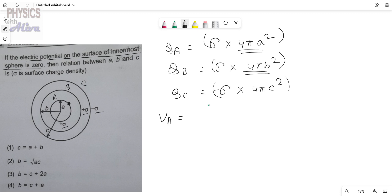Now we have to write what is the equation of the potential on surface A. If you don't know how to write the potential for this concentric spheres, then go to my channel and you will get another video where I have described how you have to write the potential for the concentric spheres.